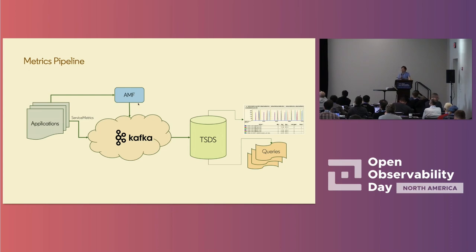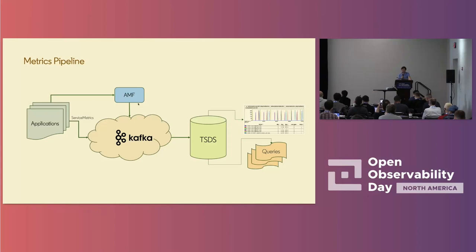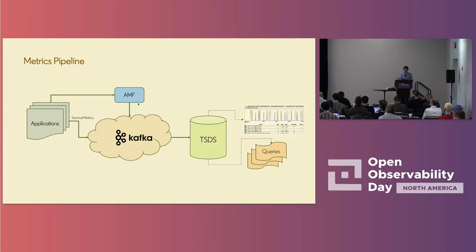The metrics data pipeline is not the focus of today's talk, so I'll just briefly touch upon it. We have a similar pipeline where a service metrics event is emitted from an application, going directly to Kafka or through a service called AMF to Kafka. The data is then emitted to TSDS — time series data storage — with a series of tools built around it for visualization, alerting, and analysis.